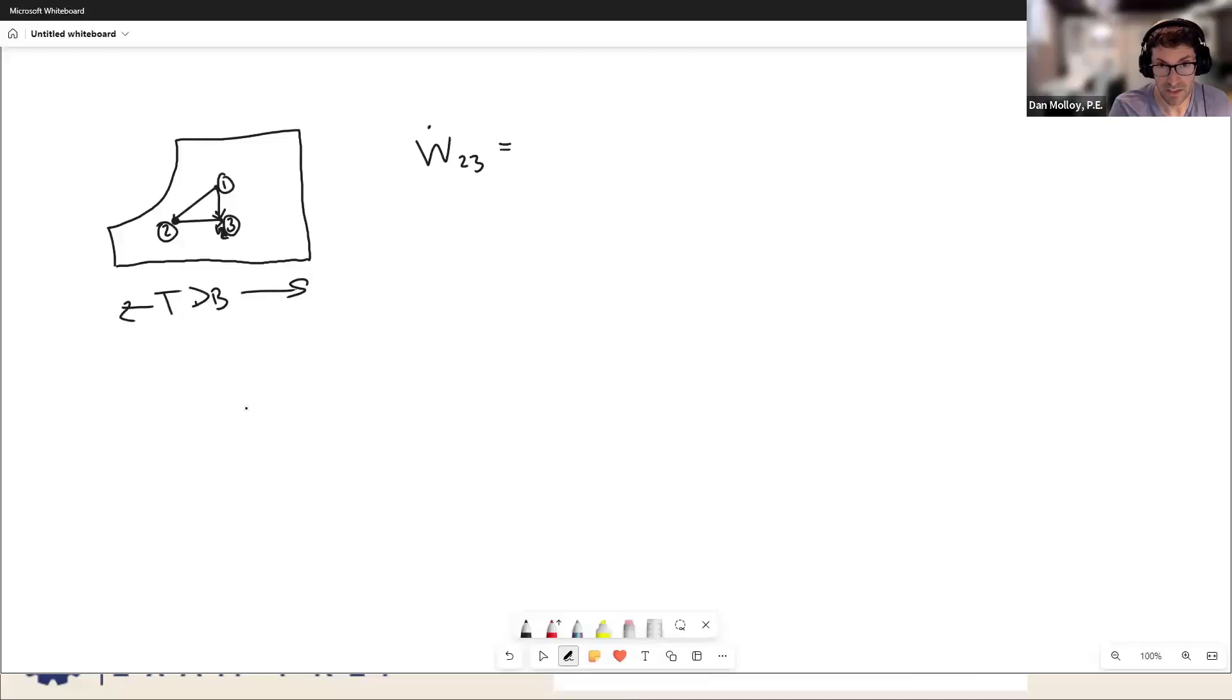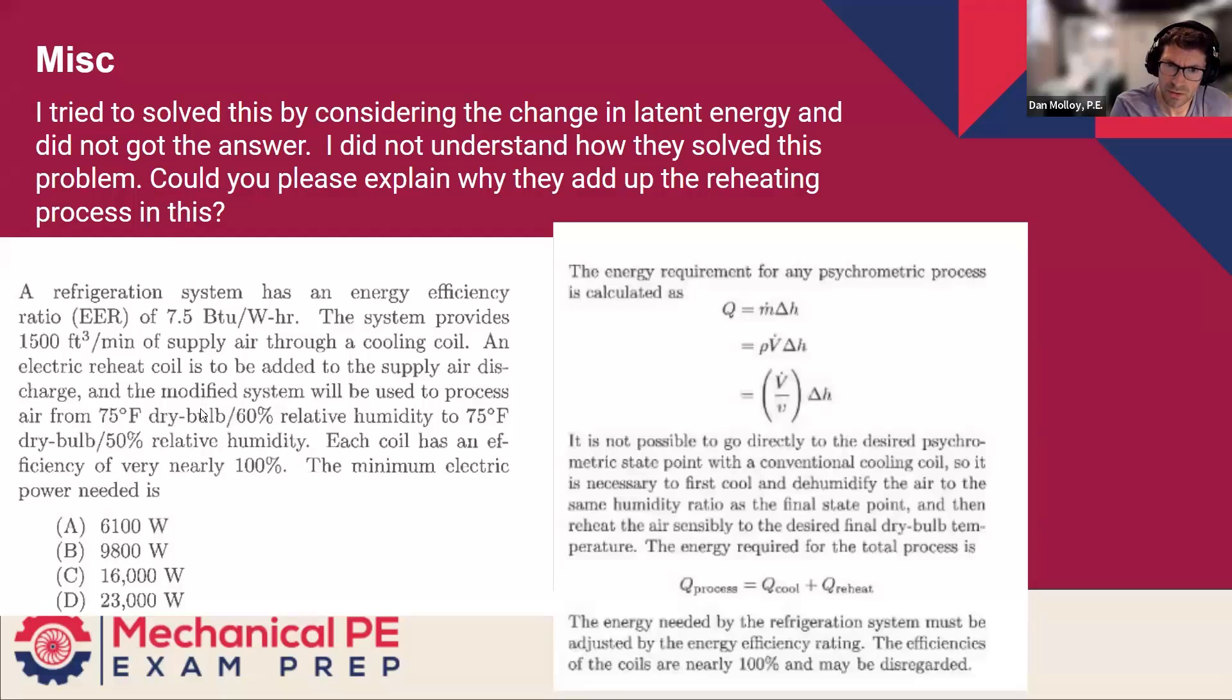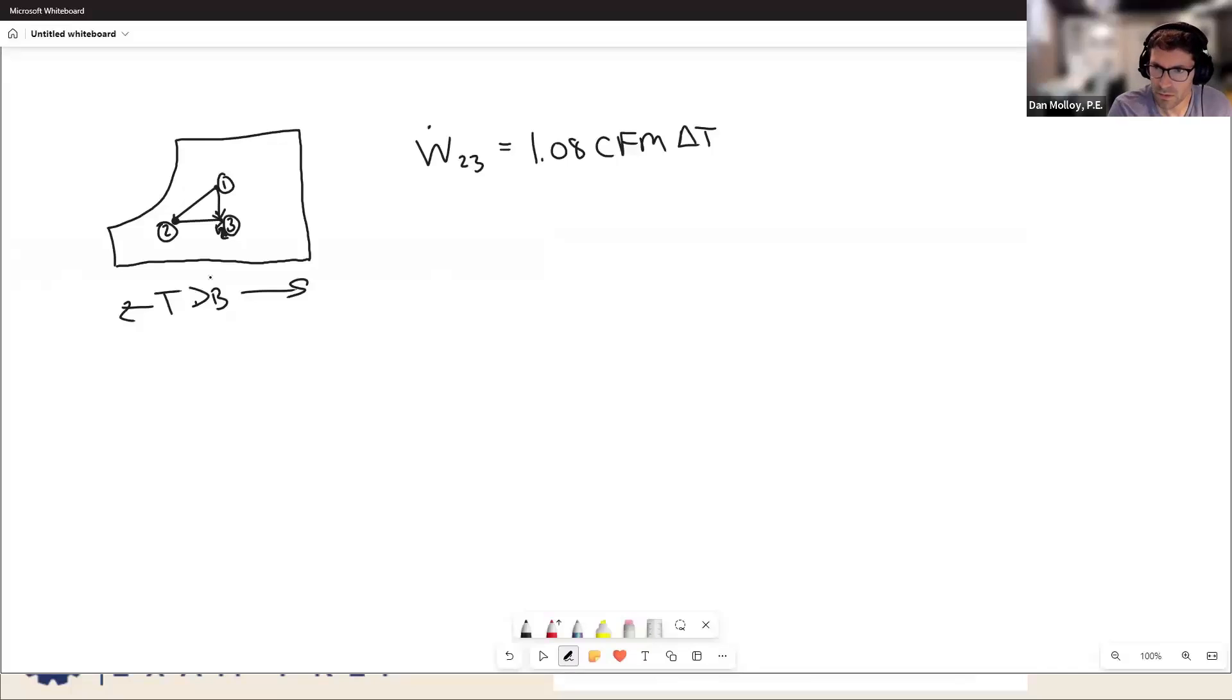That's literally just the amount of heat that's being added. So that's going to be a 1.08 CFM delta T situation. And we know the delta T, because we know the temperature at two and the temperature at three. Does it give you the temperature two off the coil? No, it doesn't. So we'll have to intuit that some other way. We know the COP. We don't know the temperature at state two. All right, let's hold that thought. T3 minus T2, where T2 is a little bit of a question mark.